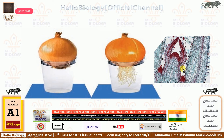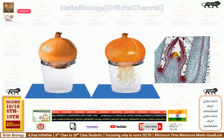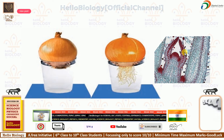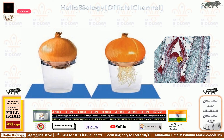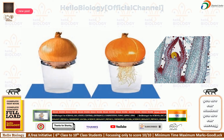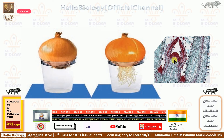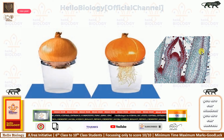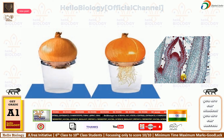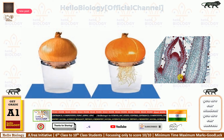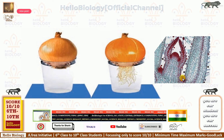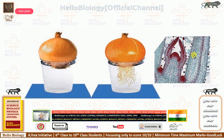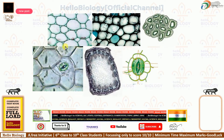There are three types of meristematic tissue: apical meristematic tissue, lateral meristematic tissue, and intercalary meristematic tissue. These tissues help in the height and width of the plant body.